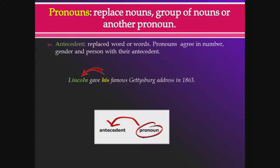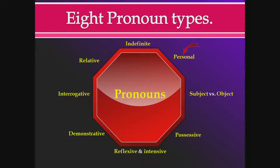The word or words that a pronoun replaces is called the antecedent — the replaced word that gets substituted by the pronoun. Pronouns agree in number, gender, and person with the antecedent. For example, 'Lincoln gave his famous Gettysburg Address in 1863' — you wouldn't say 'her' or 'their' famous Gettysburg Address, because the pronoun must agree with the antecedent.